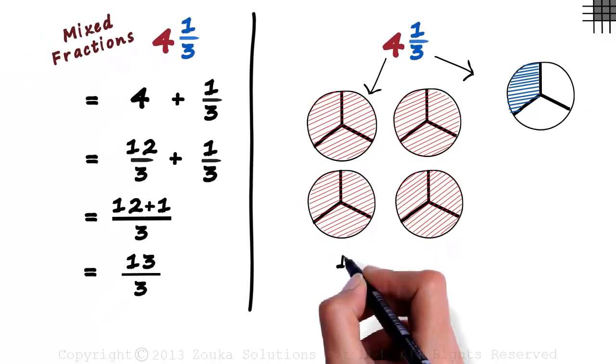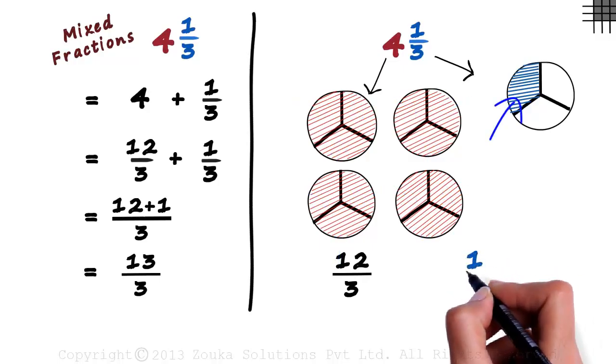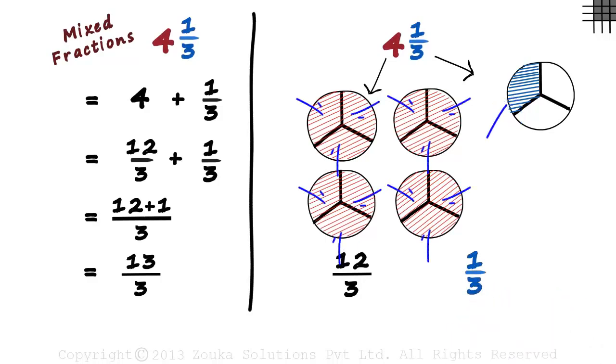The red shaded parts can be written as 12 by 3—12 1 by 3 parts. And this blue shaded part can be written as 1 by 3. Adding all these parts should give us 4 1 by 3. Adding this gives us 13 by 3.